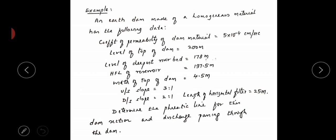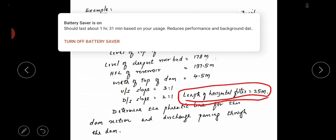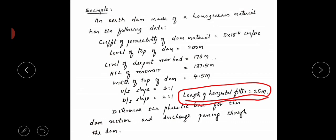They have given the width of the top of the dam as 4.5 meters and side slopes as 3:1 at upstream level and 2:1 at downstream level. We are not going to provide the filter and we have to calculate the phreatic line as well as the discharge.